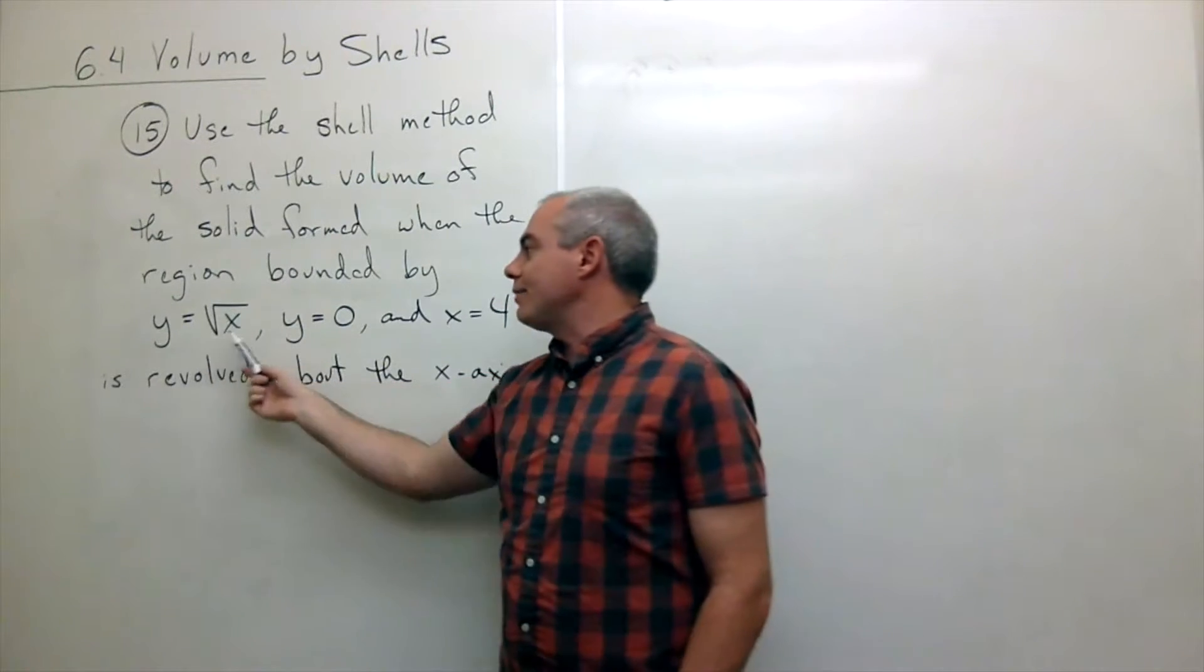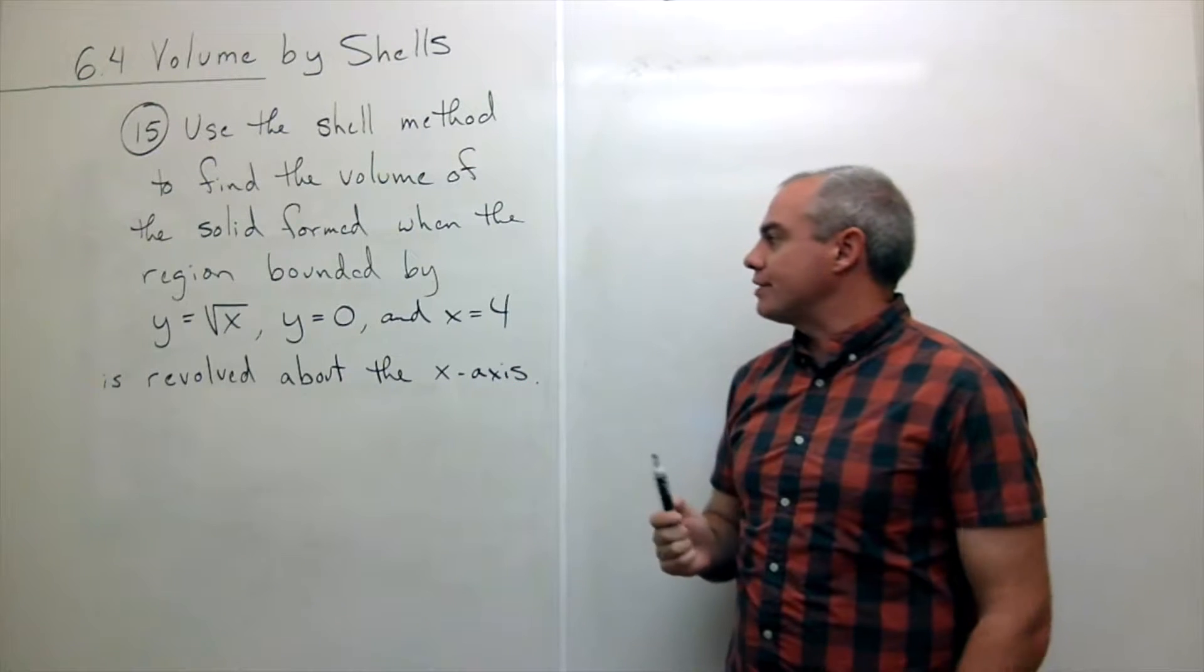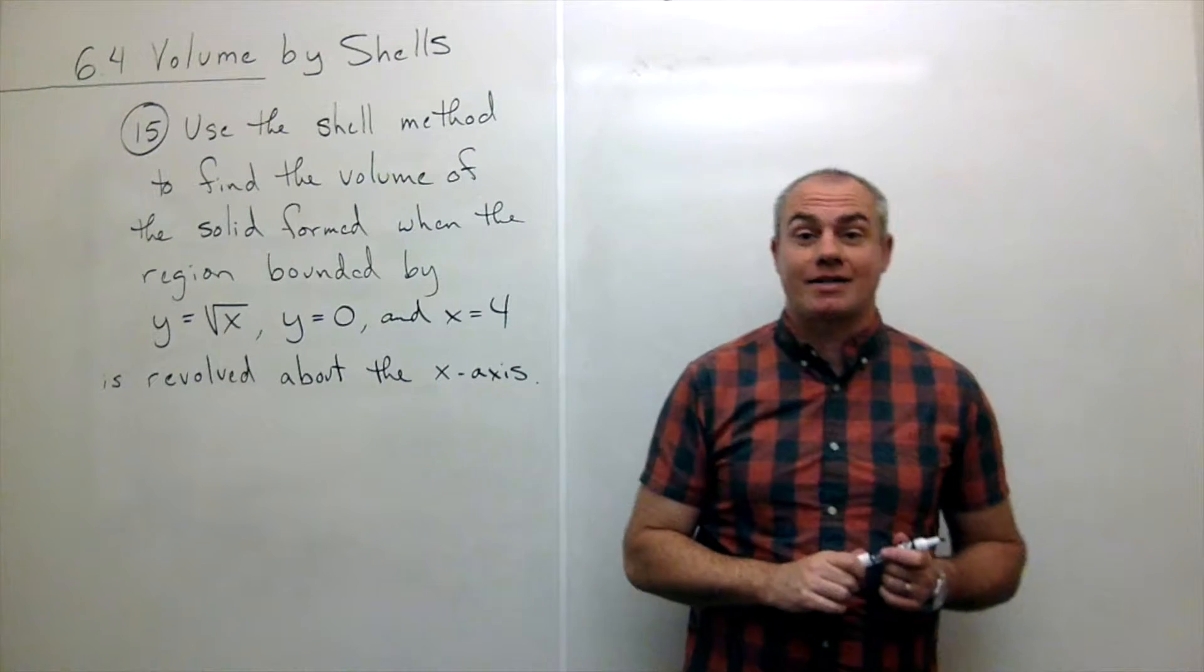the region bounded by y equals the square root of x, y equals 0, and x equals 4 is revolved around the x-axis.